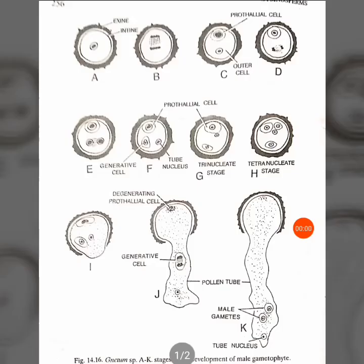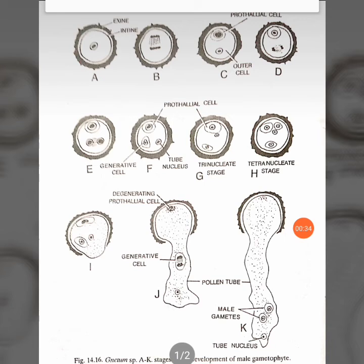Now let us look at development after pollination, shown in figures I, J, and K. A large number of pollen grains reach the pollen chamber inside the ovule and begin to germinate there. As seen in figure I, the exine — the dark spiny outer layer — ruptures, and the intine emerges in the form of a pollen tube. From figures I to K, we can see how this pollen tube elongates. It may sometimes be branched, though in this case it is unbranched.